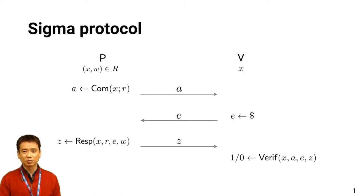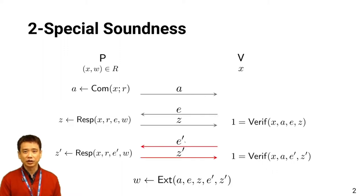Our starting point is a sigma protocol, which is a special kind of proof system where a prover convinces a verifier that there exists a witness W that satisfies a relation with respect to a statement X by exchanging three messages A, E, and Z. It is sound in the sense that given two valid transcripts on the same first message and distinct challenges, an extractor successfully computes a witness that satisfies that relation. This property is called two-special soundness.